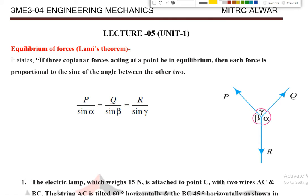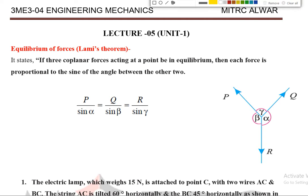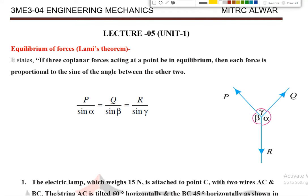What is the meaning of this statement? When three concurrent forces are acting at a point, the sine of the angle between them relates to the other two forces. We can see in this figure: three concurrent forces are acting at a point, and forces P, Q, and R are acting at a point with angles alpha, beta, and gamma between them.